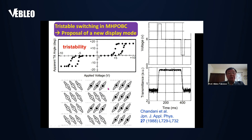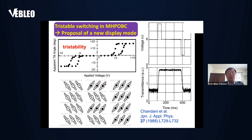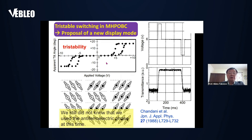One year later, we showed this model. In the stable state, molecules form a zigzag orientation. By applying the field, in this state there is no net apparent tilt angle, but tilt appears, positive or negative, by applying the field. Actually, this is far from the common sense of liquid crystals, because in a liquid crystal phase, molecules want to be parallel to each other. However, this is not the case. That's why at that time, we did not know we had discovered the antiferroelectric phase when we observed this behavior.